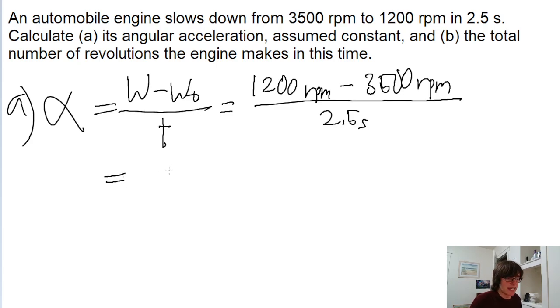So this can be simplified down to negative 2300 revolutions per minute divided by 2.5 seconds. And we're going to do a quick unit conversion, because normally when we have these problems dealing with angular units...